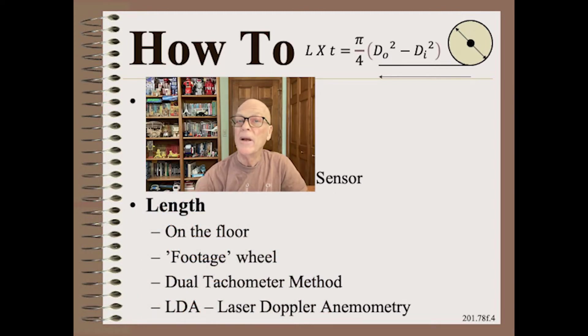We also know how to measure length. In order of increasing accuracy, you could measure length on the floor, provided that the length was not impractically long. Faster, but maybe no more accurate, is to use a footage wheel riding on the web. This is so super crude, I don't recommend it for almost any application. Finally, you could use the dual tachometer method that most modern winders employ.